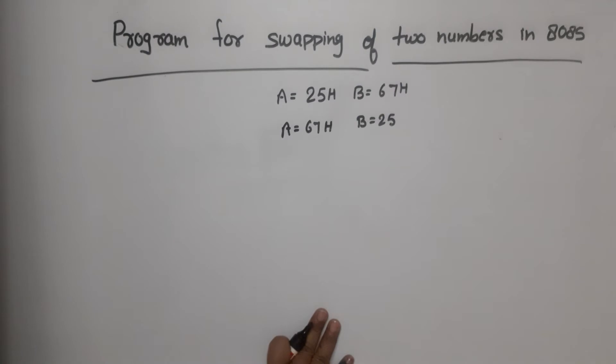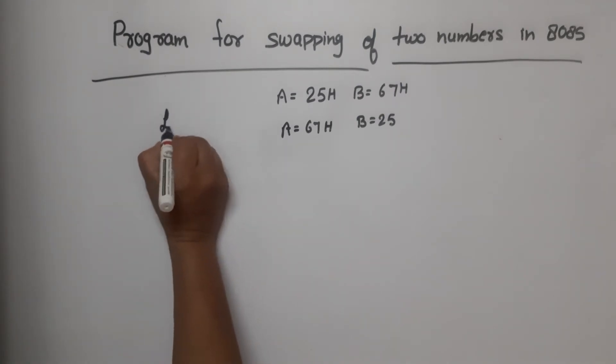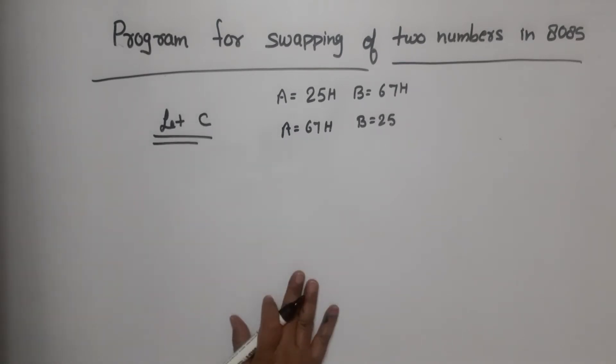So when we swap it, we will copy it first. So we need one more extra register. Let us take extra register which we will take C. So we have extra register.